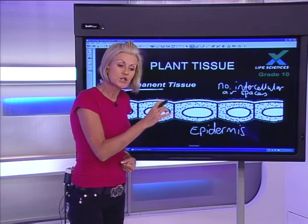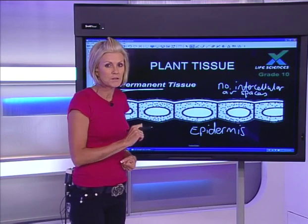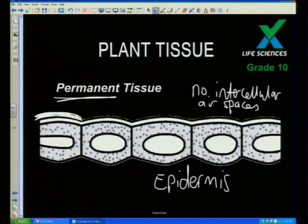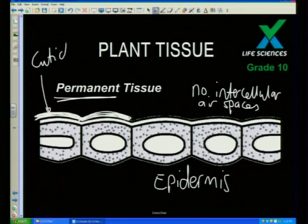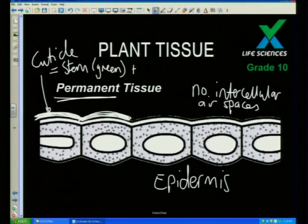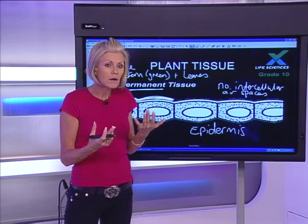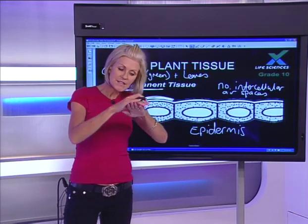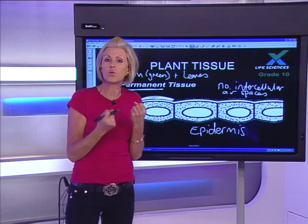We're also going to find epidermal tissue in the roots. The epidermis on green stems and leaves has a cuticle — a thick waxy layer. Why would we have a waxy cuticle on leaves? To prevent transpiration, to prevent too much water loss from the plant. That waxy cuticle is there to keep the water in the plant.